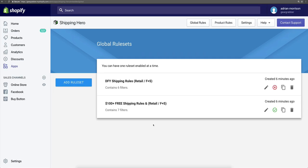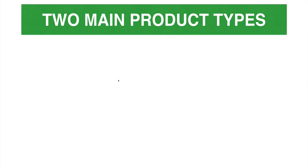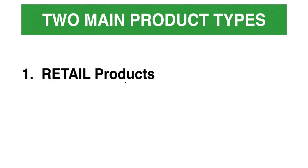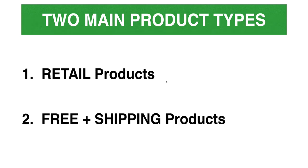So right now, let's do a little training on the different types of items and shipping rates that we use. There are two main product types that most people use on their stores. The main one is retail products — products that are selling at a retail price. And then there are a lot of people that use the free plus shipping method, where they offer the product completely free but charge a specific shipping and handling rate.